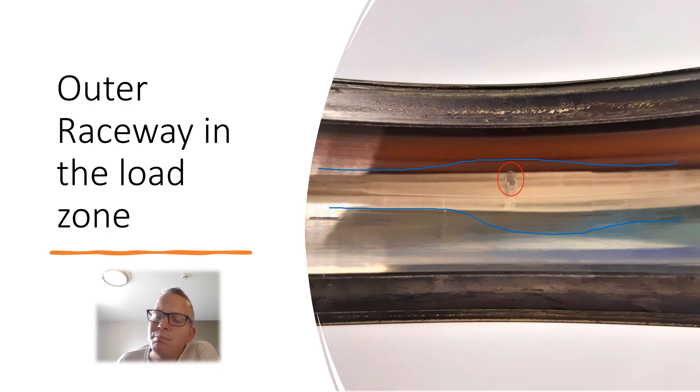So this dull bit here is common mode voltage from the variable speed drive. It's just a pattern often I've seen them. But this is going to be the load zone in the bearing which is going to get all the subsurface fatigue.